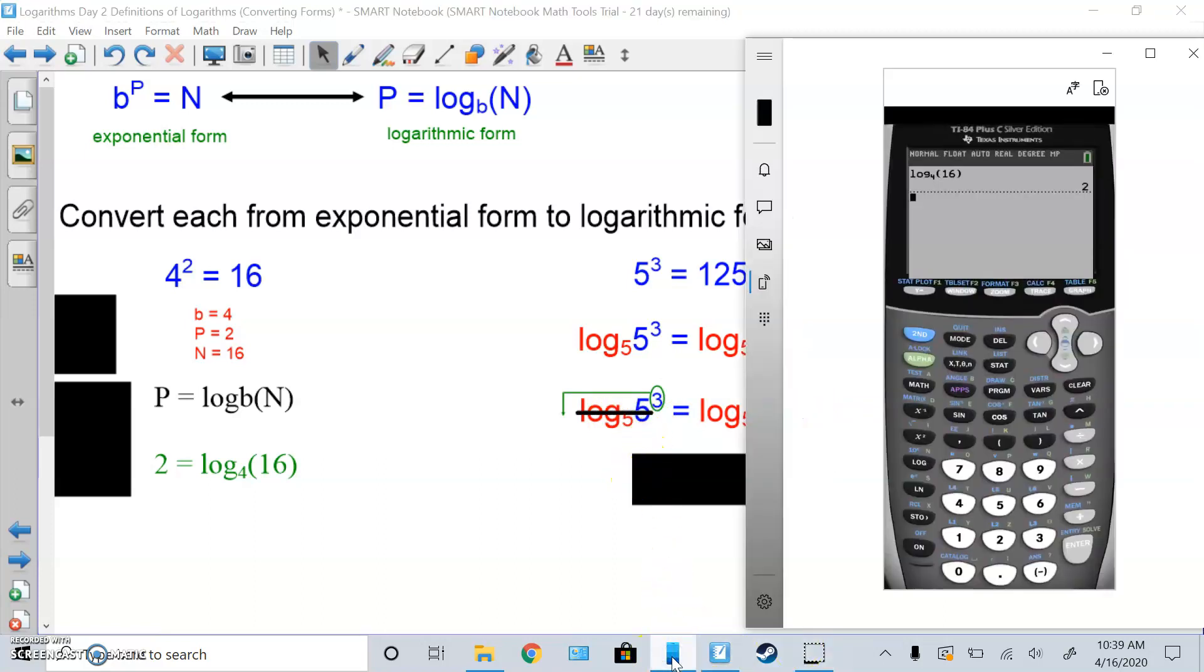So for example, math, up, log base 5 of 5, or 8 of 8 in this case, is 1. As long as the base and the number inside match, it cancels out. So log base 100 of 100 is also 1.